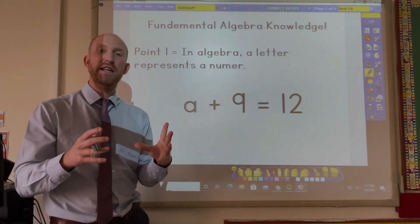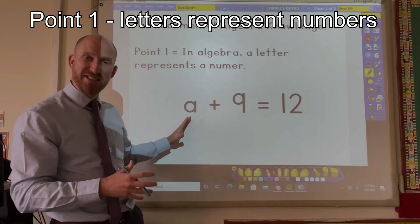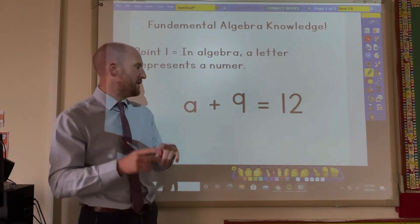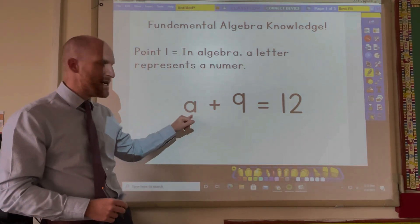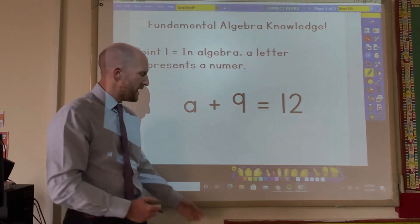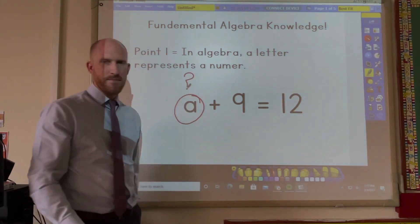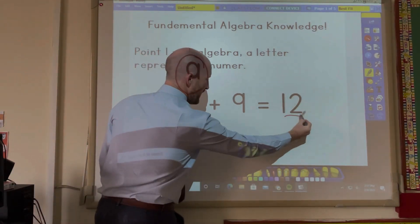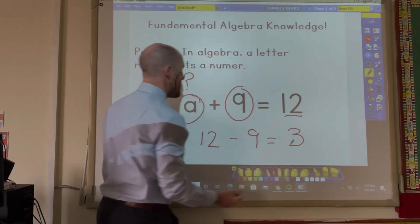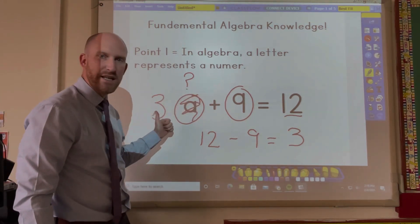Now the first thing that we need to understand when first beginning to learn algebra is that letters can represent numbers. So what does that exactly mean? Have a look at my example here. A plus 9 equals 12. So in this equation we have A representing a mystery number. And we can use the answer and the numbers that we have to work out that A is actually 3. And A in this equation was representing 3.